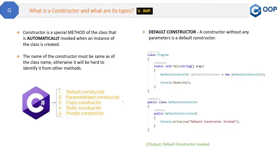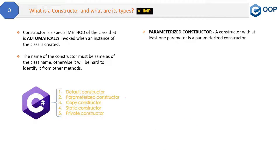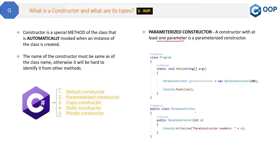Now let's move to the next type: the parameterized constructor. A constructor with at least one parameter is a parameterized constructor. In the code, we have a class called ParaConstructor, and inside the constructor we have a variable x of type integer. So whenever you create an object of the ParaConstructor class, you must pass a variable of type integer.